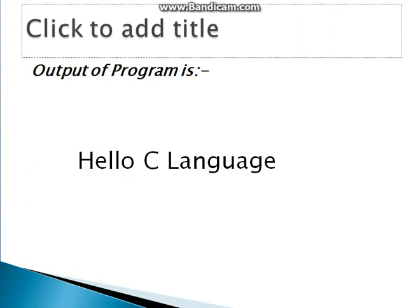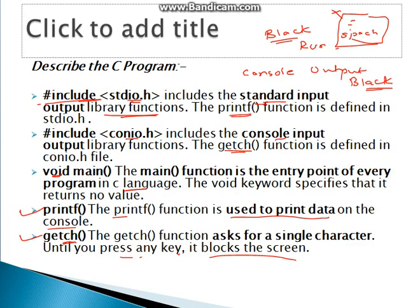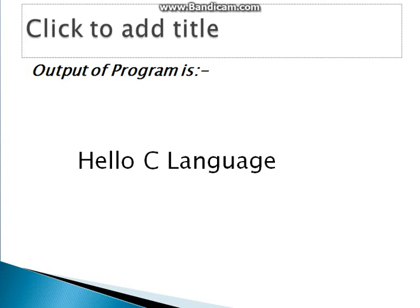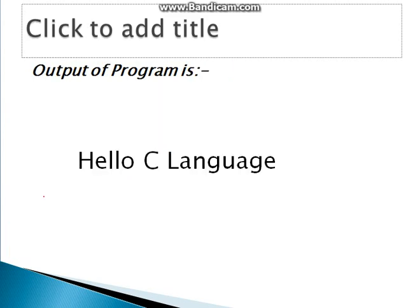The output of the program is 'Hello'. In the first program we wrote stdio.h, conio.h, void main, and printf to print hello. The output written was 'Hello C language' and that came as the output on the screen.